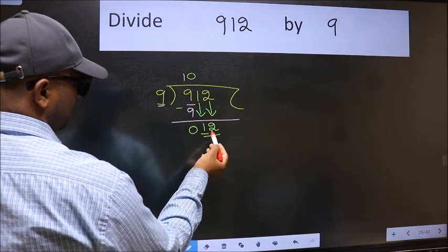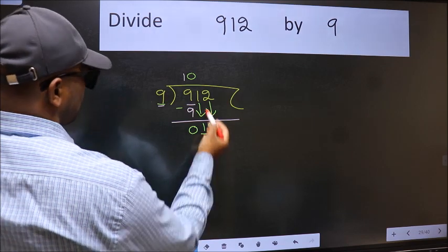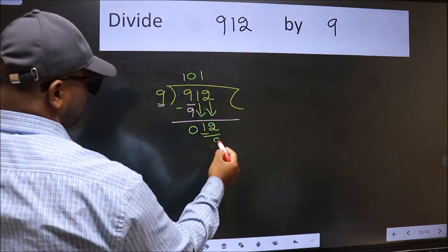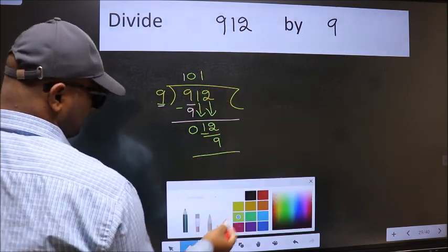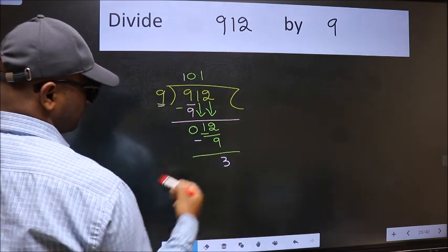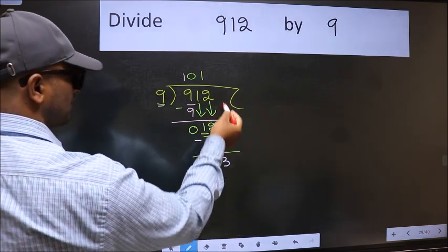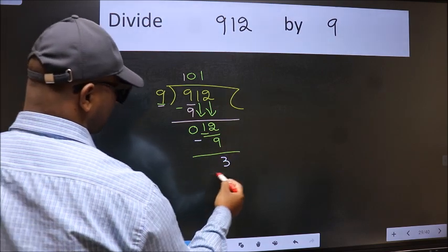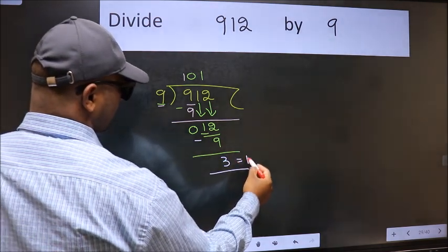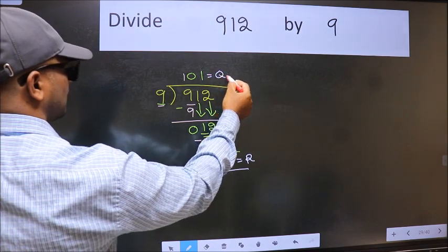Now 12. A number close to 12 in 9 table is 9 once 9. Now we should subtract. We get 3. No more numbers to bring down. So we stop here. This is our remainder and this is our quotient.